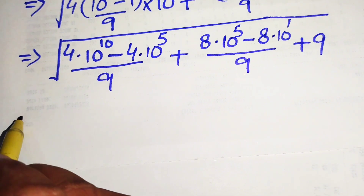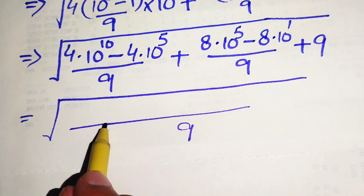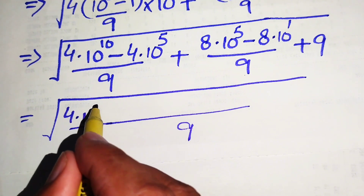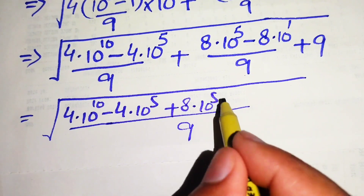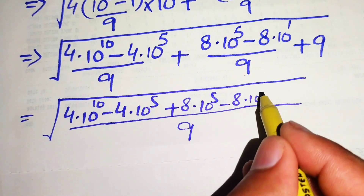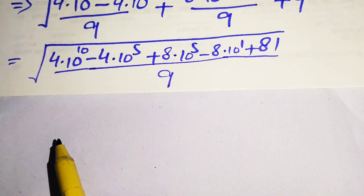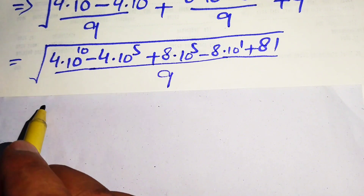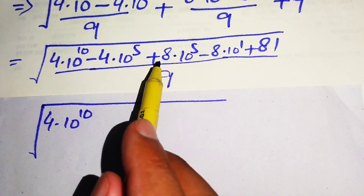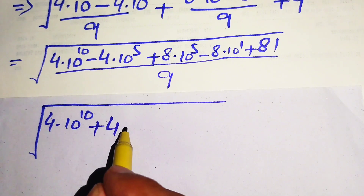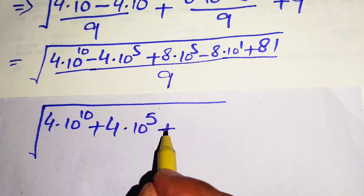Now we need to take the LCM of all these terms. Our LCM is 9, so dividing by 9 we get: 4 times of 10 raised to power 10, minus 4 times of 10 raised to power 5, plus 8 times of 10 raised to power 5, minus 8 times of 10 raised to power 1, plus 9 times of 9 equals 81. After a little simplification, 4 times of 10 raised to power 5 plus 8 times of 10 raised to power 5 becomes 4 times of 10 raised to power 5, and minus 80 plus 81 becomes plus 1, all divided by 9.